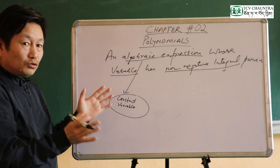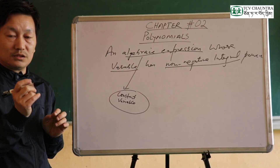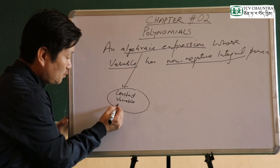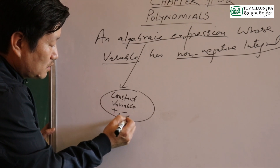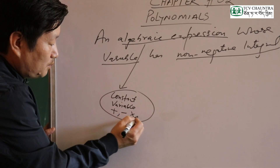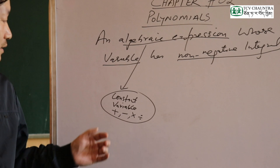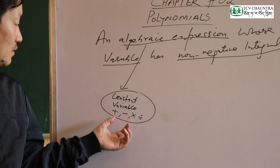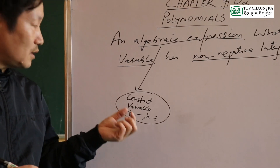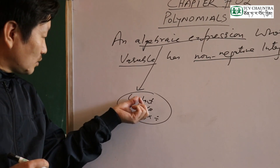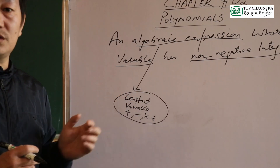As an example, an algebraic expression involves arithmetic operations: addition, subtraction, multiplication, and division. We can see the algebraic expression as a combination of constant and variable components.